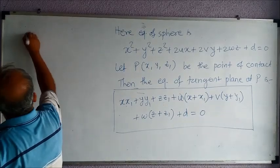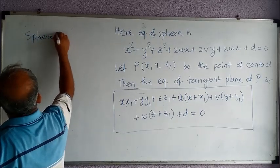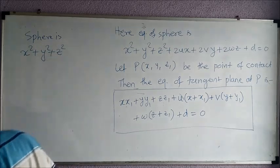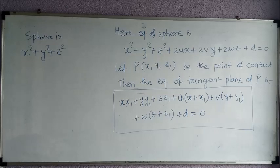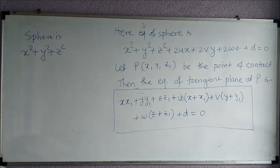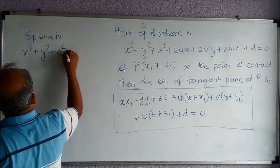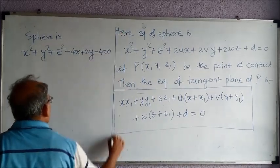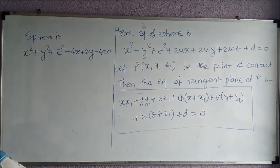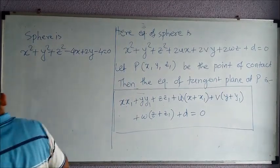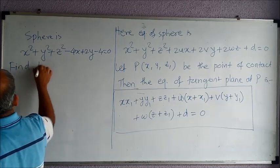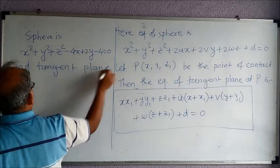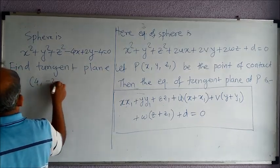Let us take one illustration. x² + y² + z² - 4x + 2y - 4 = 0. Suppose this is a sphere given. Find tangent plane at (4, -2, 2).